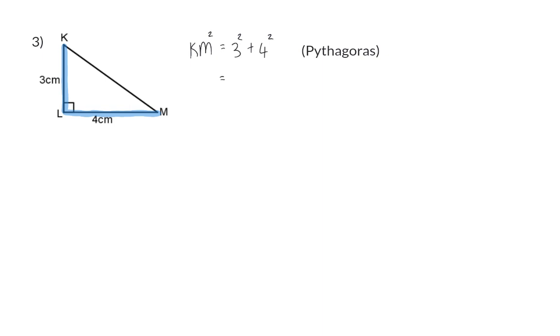9 plus 16 will give us 25. And now to determine the value of KM only we need to take the square root of 25 which means that KM is equal to five.